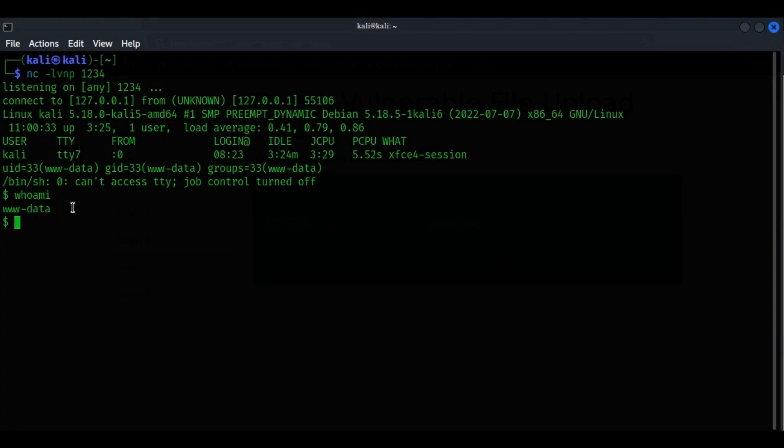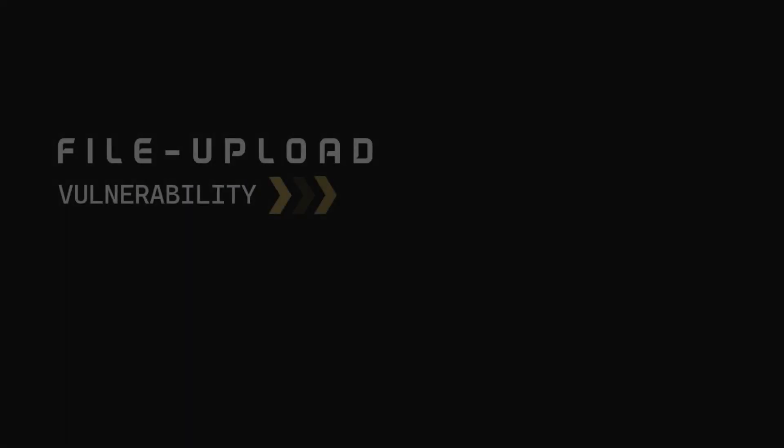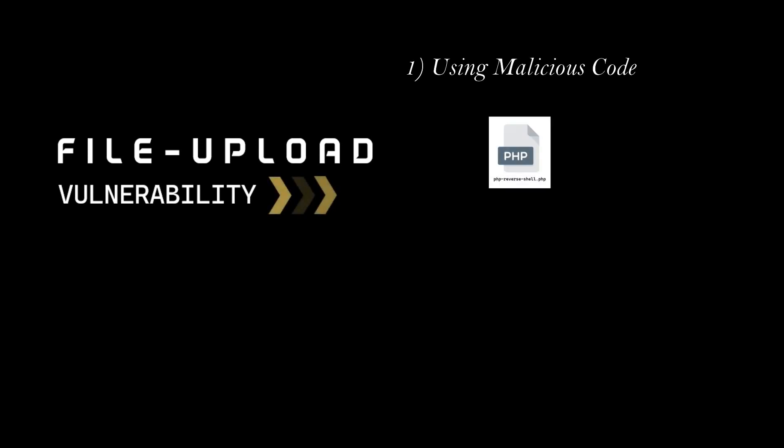Hello everyone, welcome back again. In this video, we will deal with security issues related to file upload. There are several types of attacks that can be used to exploit file upload vulnerabilities. For example, an attacker may try to upload a file that contains malicious code, such as a PHP script or an executable file. The attacker could then access the file from the server and execute the code, potentially gaining access to sensitive data or taking control of the server.